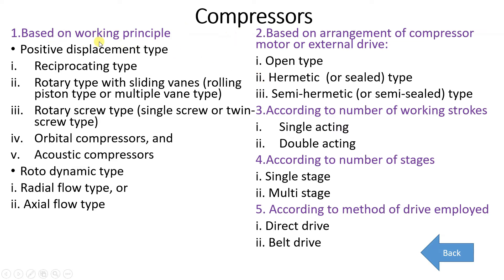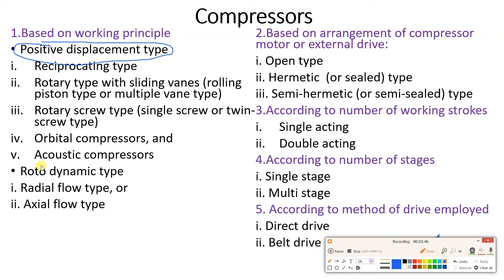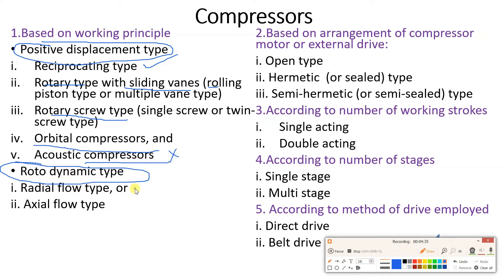Based on working principle, we have two types of compressors: first is positive displacement and second is rotodynamic. In positive displacement we have reciprocating compressor, rotary sliding vane type, rotary screw type (single screw or twin screw), orbital compressor, and acoustic compressor. In rotodynamic we have radial and axial flow types.